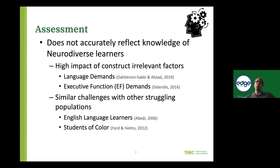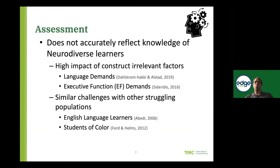Typically, what we see is high demands from construct-irrelevant factors. On something like a STEM assessment, there are very high language demands — students have to read fairly complex text, be familiar with new terminology, and decode new symbols. There are also very high executive function demands: staying on task, managing frustration, regulating emotions. While those are important skills, they don't tell me whether the student has the knowledge I'm trying to assess.